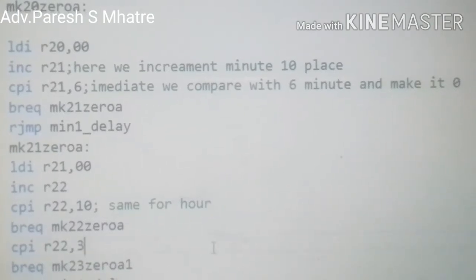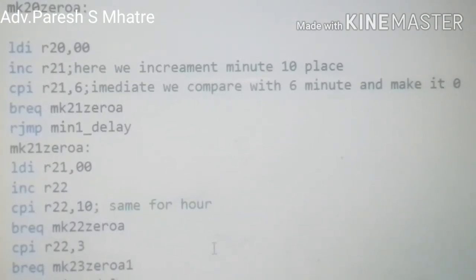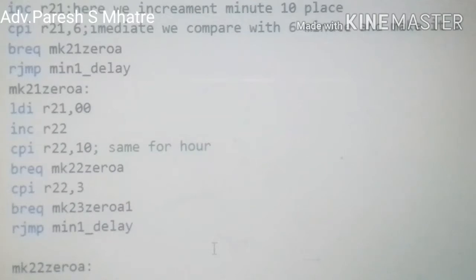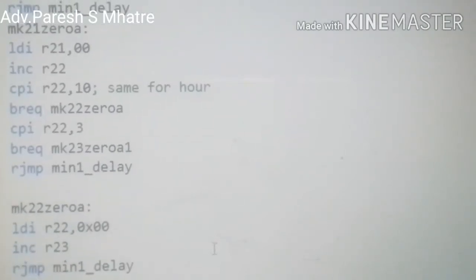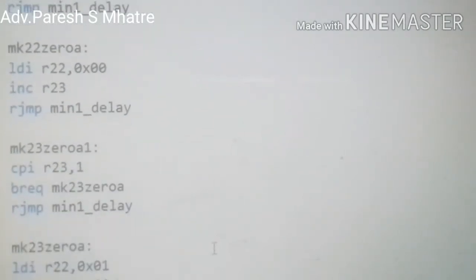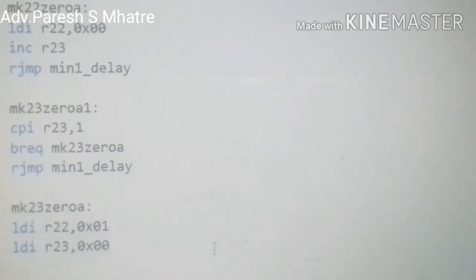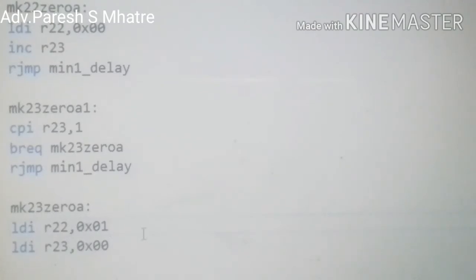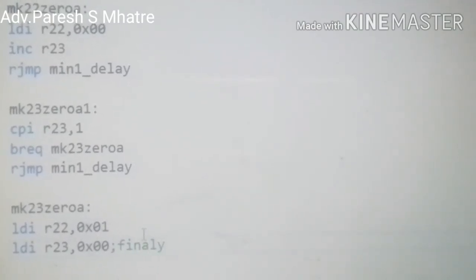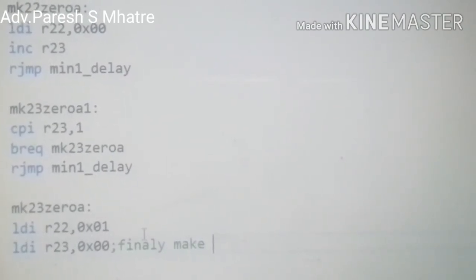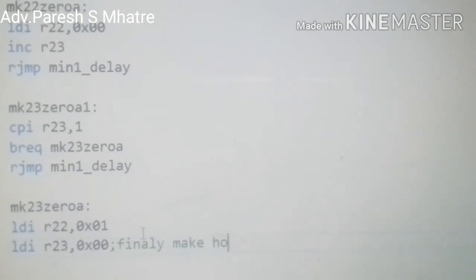Here we start incrementing R22, which is our hours ones place. Same as above, R22 and R23 are reset to 0 when appropriate. This programming gives us a clock on our 4-digit 7-segment display. Now we will see the 8-millisecond delay subroutine.